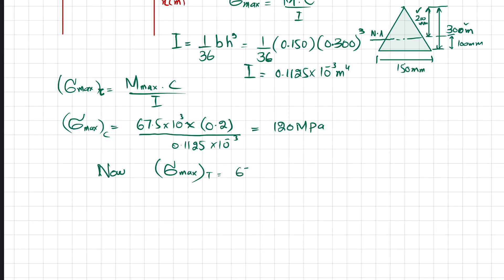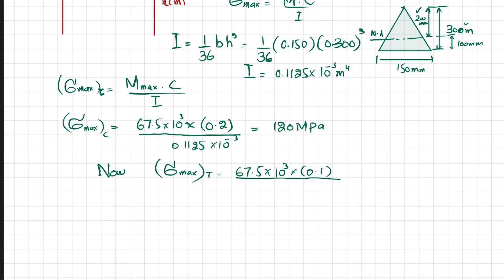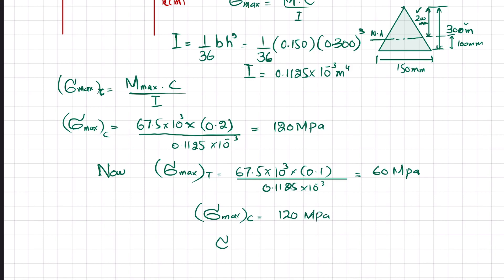For maximum tensile stress, the lower portion is in tension. The distance from the neutral axis to the base is c = 100 mm = 0.1 m. Maximum bending stress for tension = 67.5 × 10³ × 0.1 / (0.1125 × 10⁻³) = 60 MPa. So maximum bending stress in compression is 120 MPa and maximum bending stress in tension is 60 MPa.